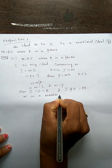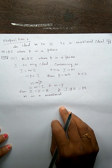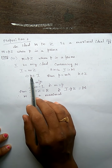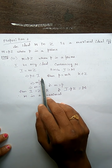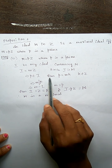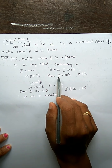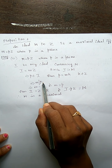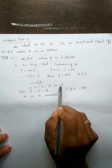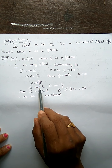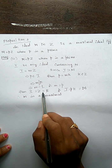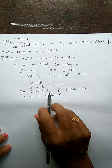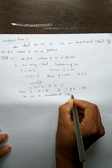We considered one ideal I properly containing M. Since p belongs to M and M is properly contained in I, p also belongs to I. Writing p as mk for some k in Z gives m divides p. Since p is prime, either m equals 1 giving I equals Z, or m equals p giving I equals M. Therefore M is a maximal ideal. That proves the converse part.